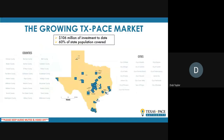As for where PACE is available, it's a locally enabled program — a commissioner's court, county judge, mayor, and city council need to take affirmative action to create a PACE program. Most recently, the city of San Antonio joined in April as the newest entrant. Over $100 million of investment today, and more than half the population of the state is covered by one of these active PACE districts.